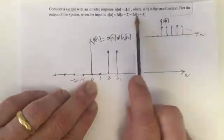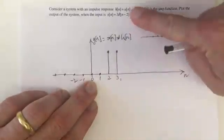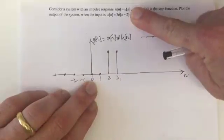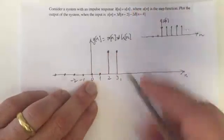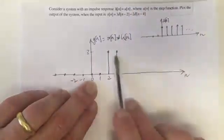And if there were no more impulses, if our input was just 3 times δ(n-2), this would continue on at the height of 3 forevermore.